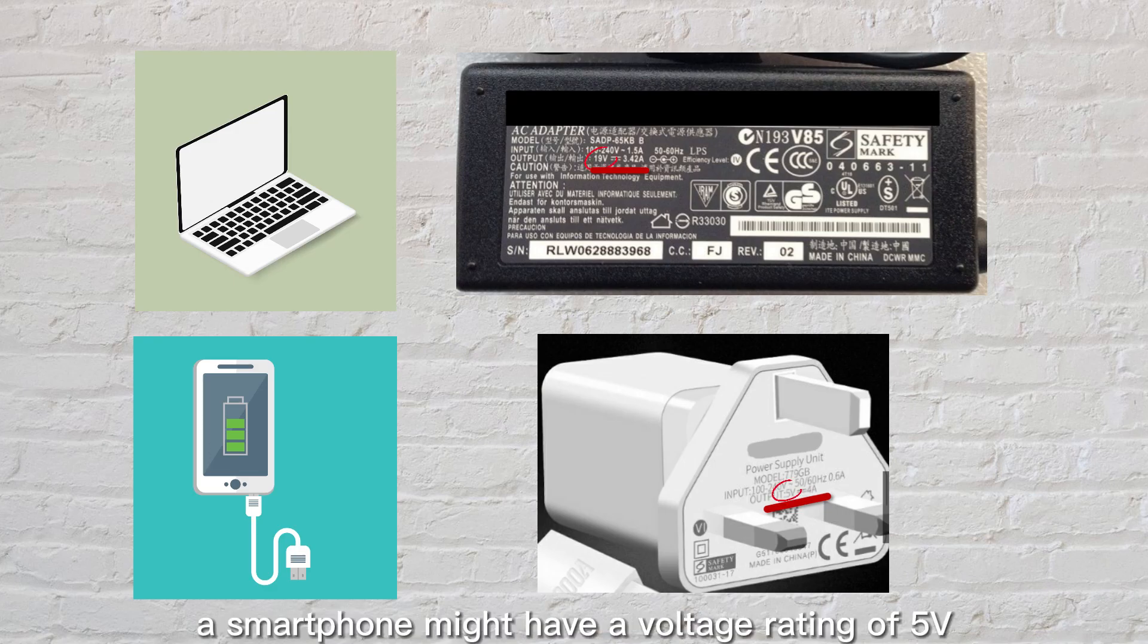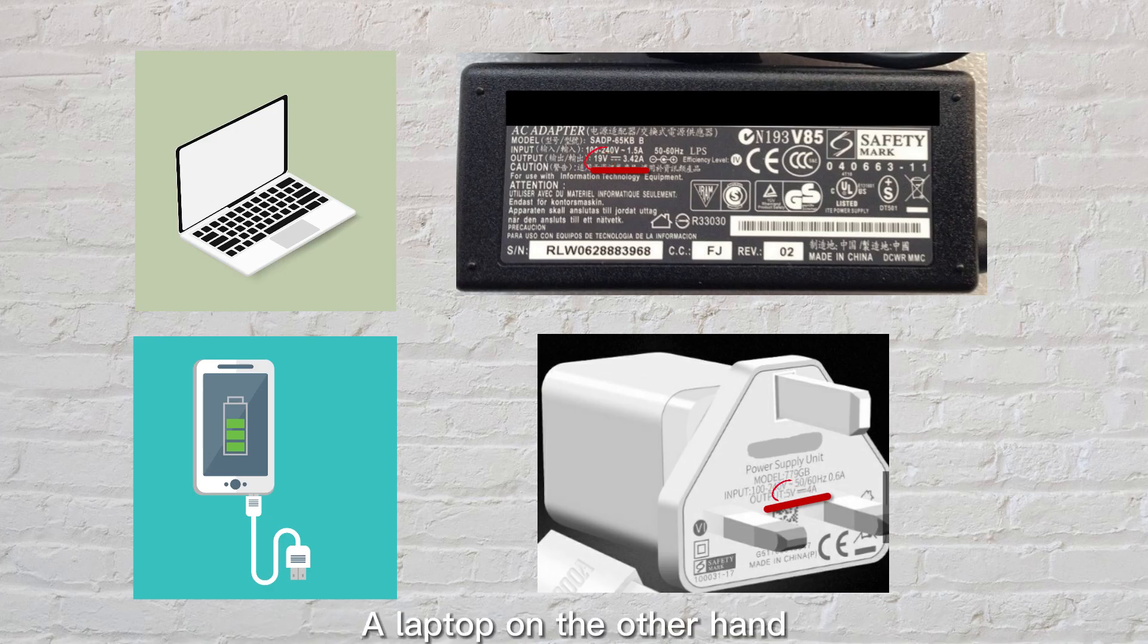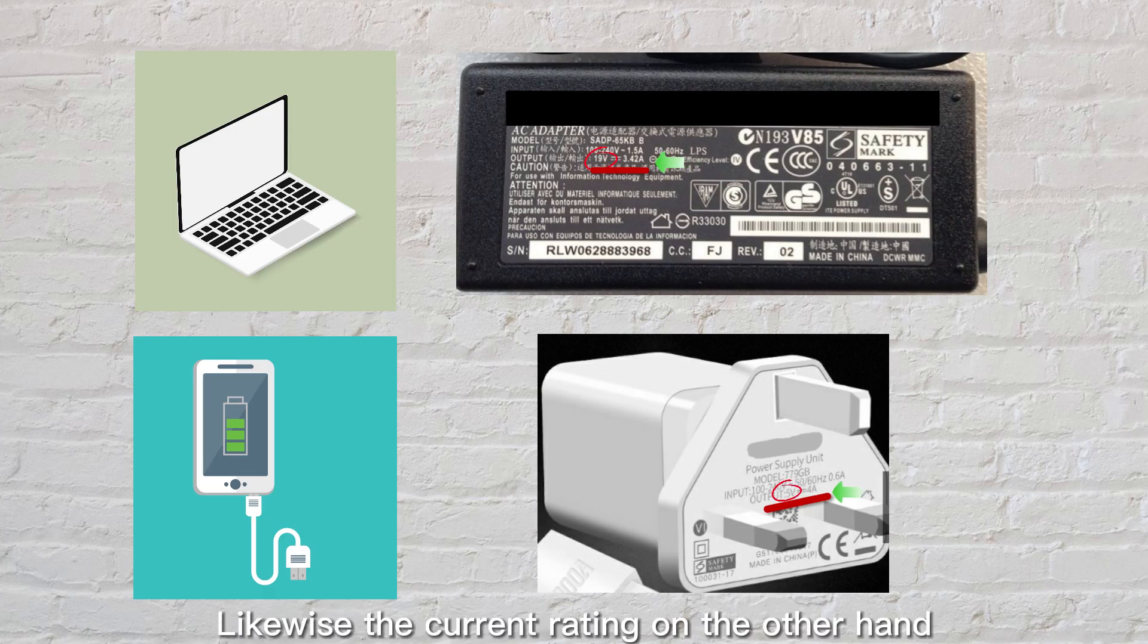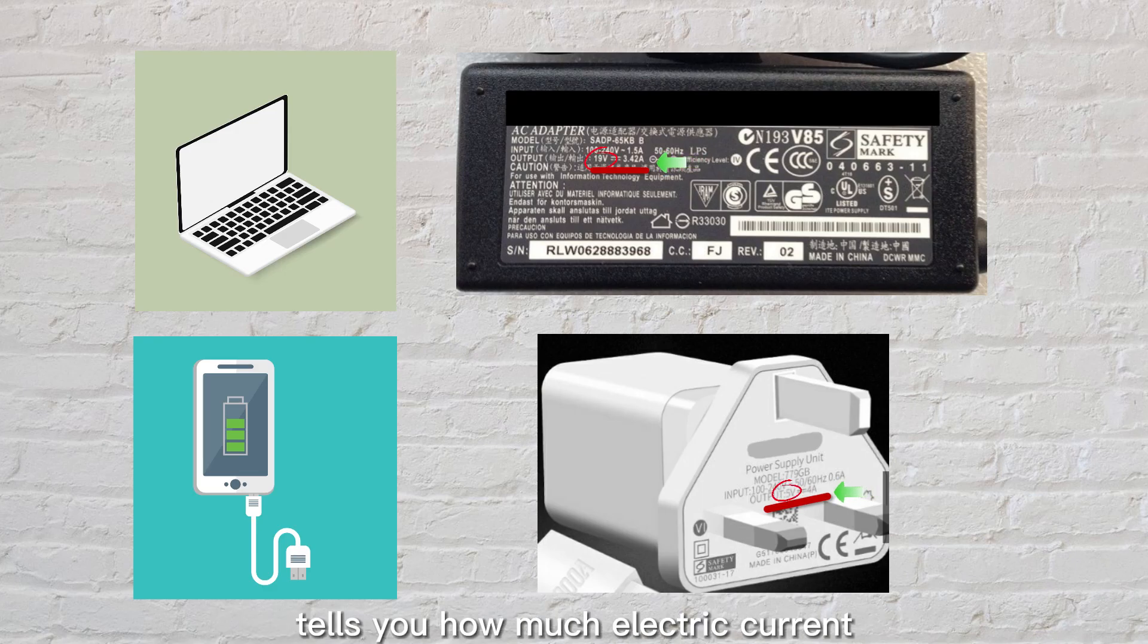For example, a smartphone might have a voltage rating of 5 volts. A laptop, on the other hand, might have a voltage rating of 19 volts. Likewise, the current rating tells you how much electric current the device requires to function properly.